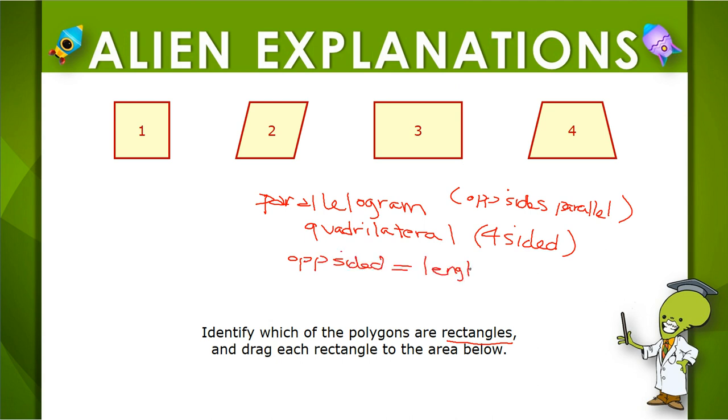And what's one more attribute of a rectangle? All of its angles are right angles, four right angles. Do you remember what a right angle is? That's an angle that looks like a corner.